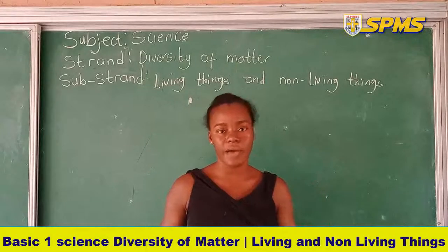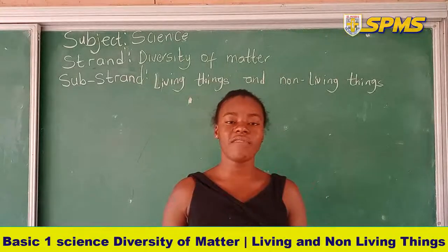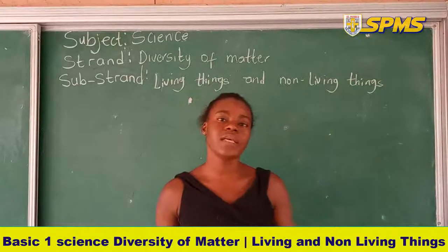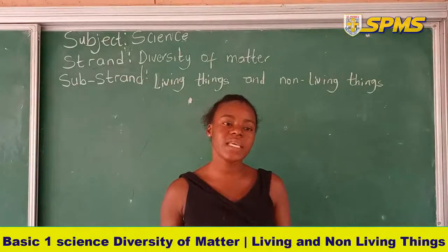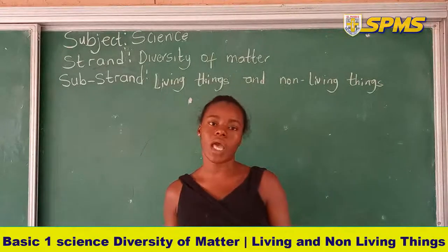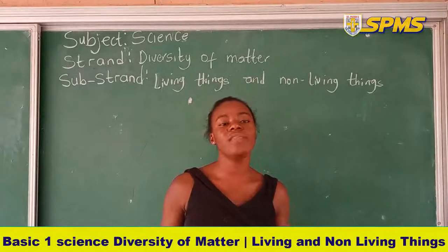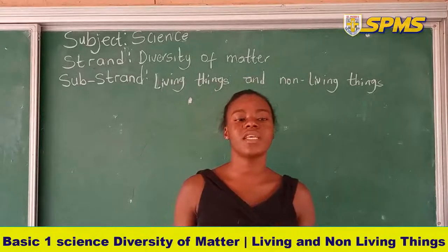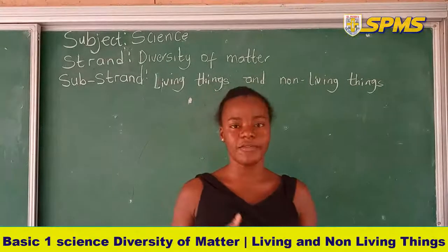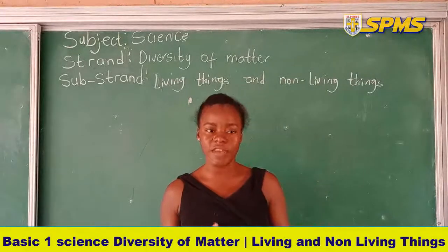Now let's take the two most common living things around us: animals and plants. We are going to talk about some basic needs of animals and plants in order to survive. All living things need air, water, and food — those are the basic needs of living things.